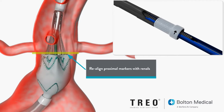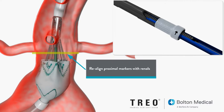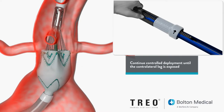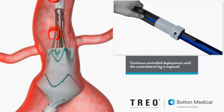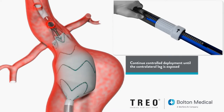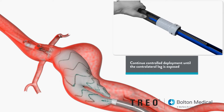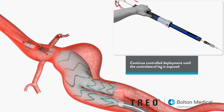During initial deployment, final cranial and caudal adjustments are done by moving the delivery system using the stationary grip. Continue deployment until the contralateral gate is released and the ipsilateral leg is still constrained in the sheath.